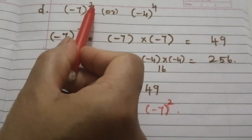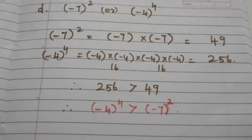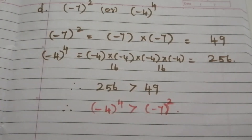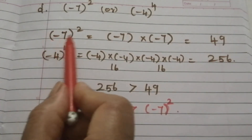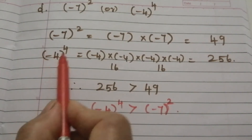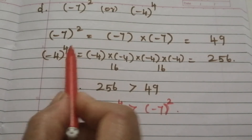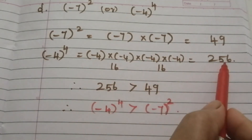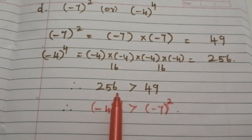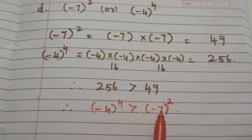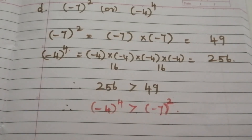(d) Minus 7 power 2 or minus 4 power 4 — both have negative base with even exponent, so both answers are positive. 7 square is 49, and minus 4 power 4 equals 256. Since 256 is greater than 49, minus 4 power 4 is the greater number.